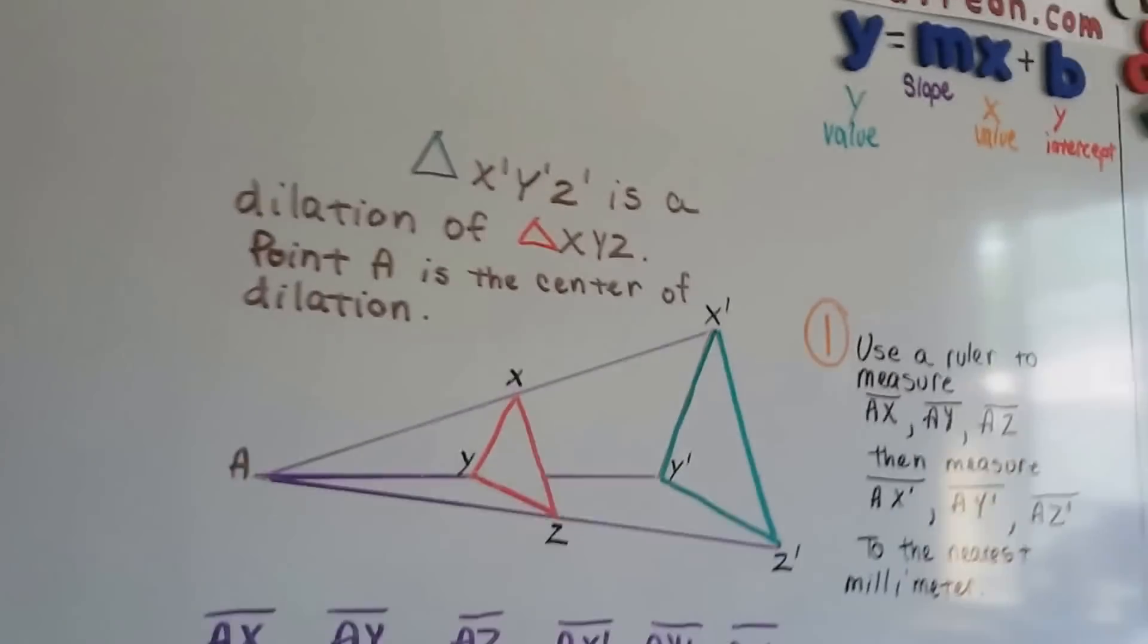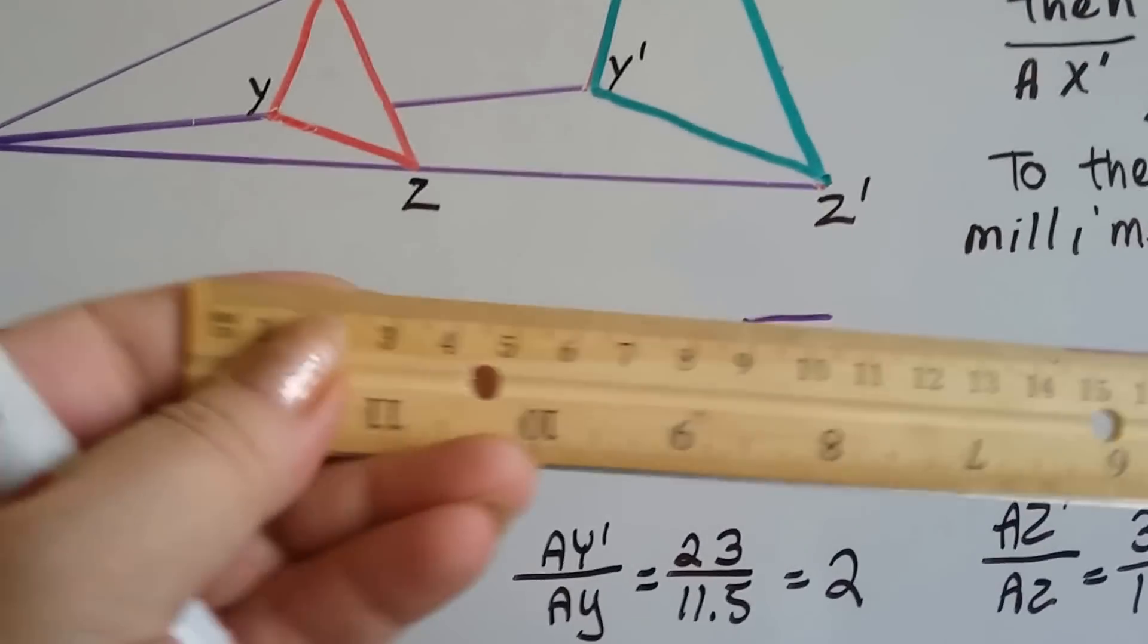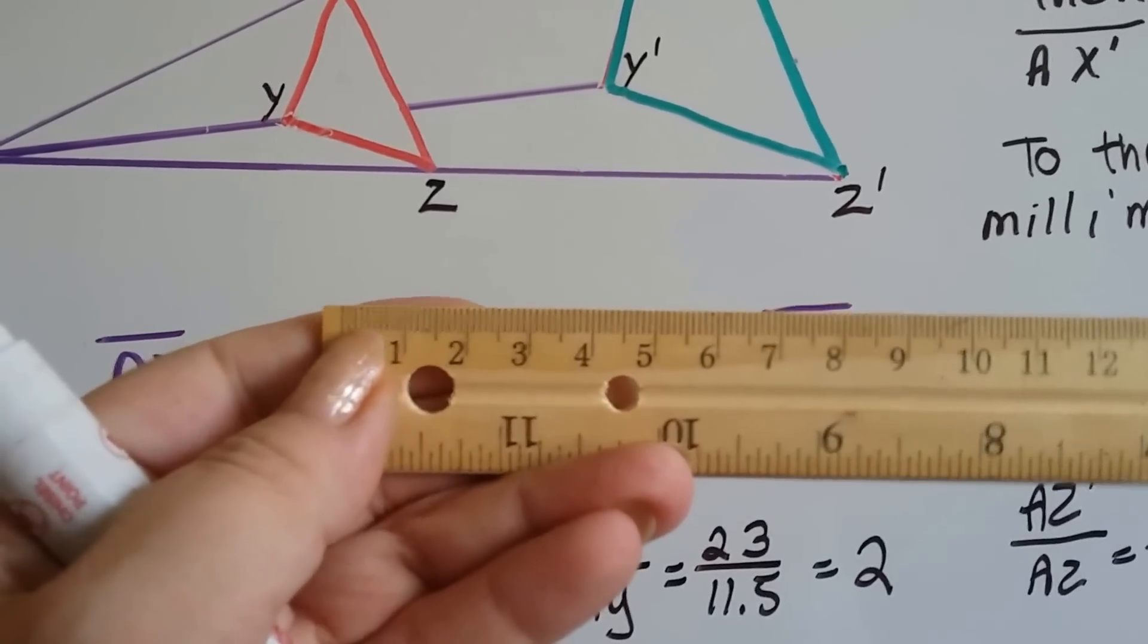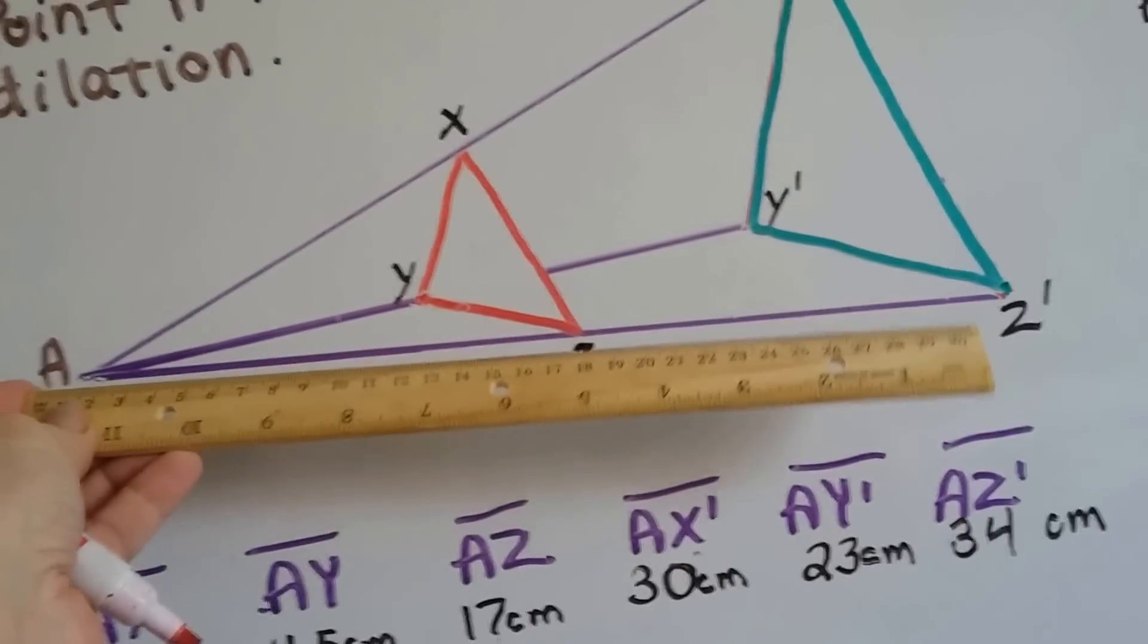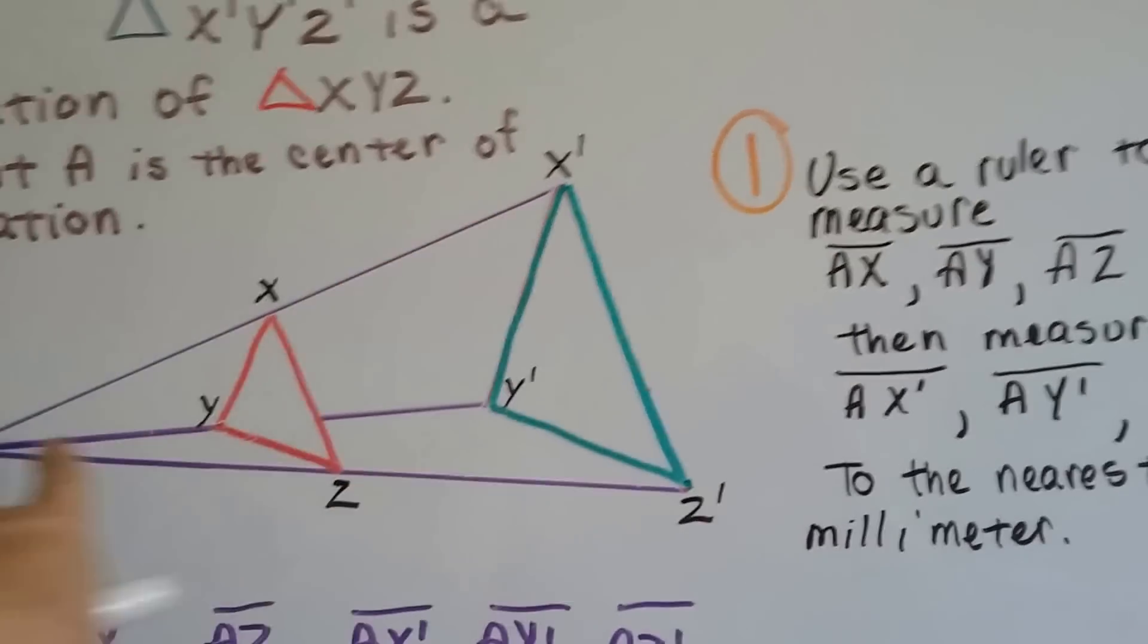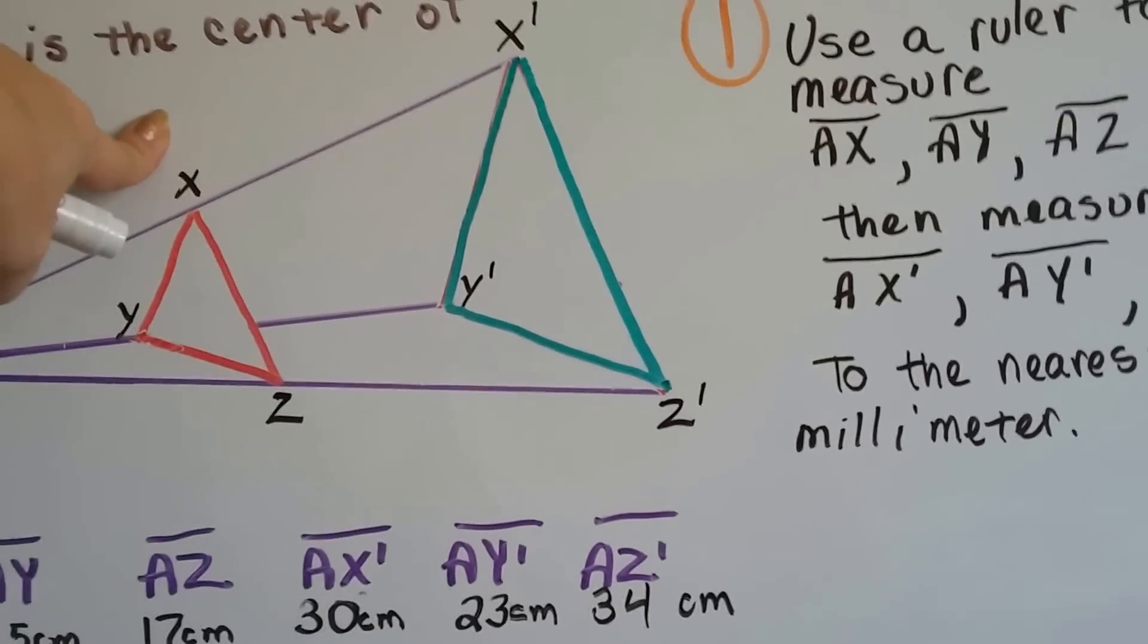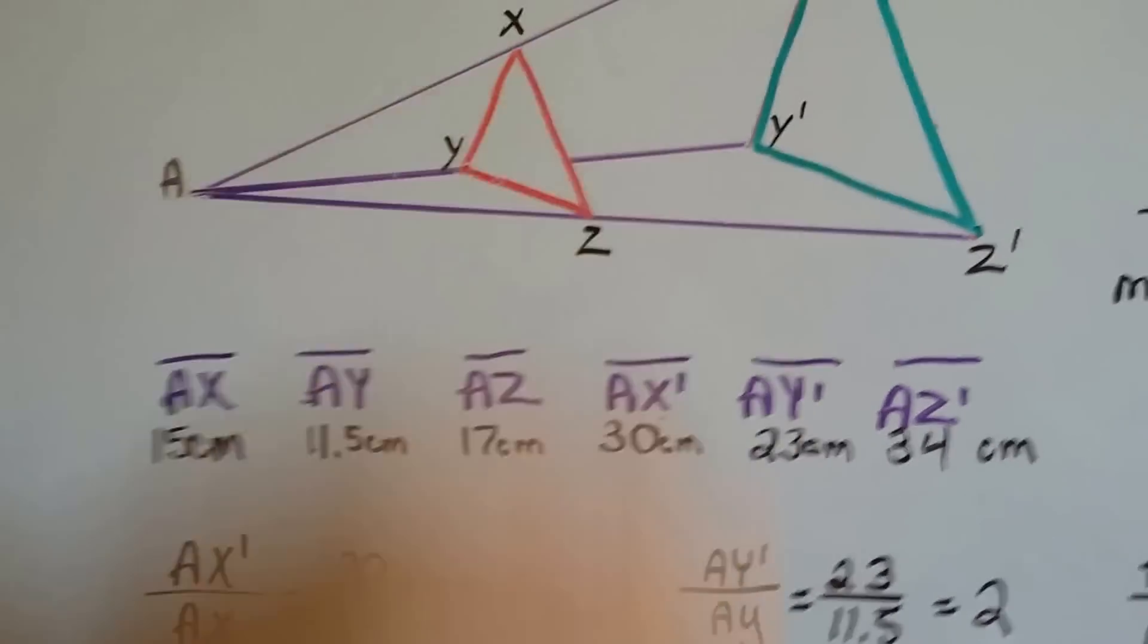So, we get our little trusty ruler and we use millimeters, these little tiny guys on this side. From zero to one is one centimeter, but the little tiny lines in between here are millimeters. And we measure the line from A to Z here. Then, we measure from A to X prime. So, we measure from A to X prime and A to Y prime and A to Z prime. So, we measured from here to here and wrote down our values. And then we measure from here to here and write down our values. We do it to the nearest millimeter.